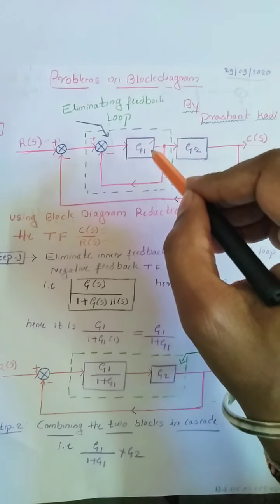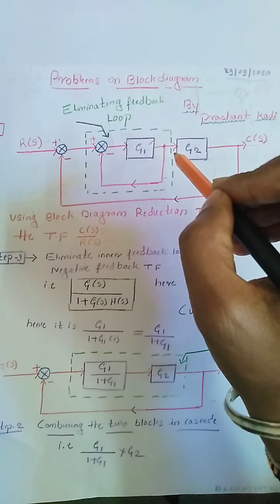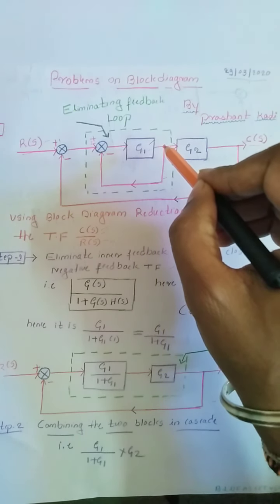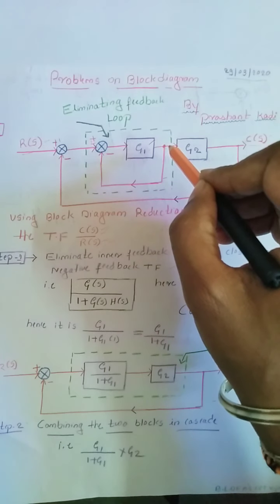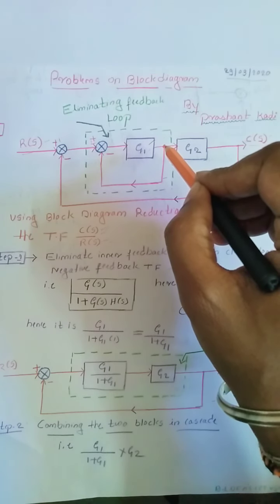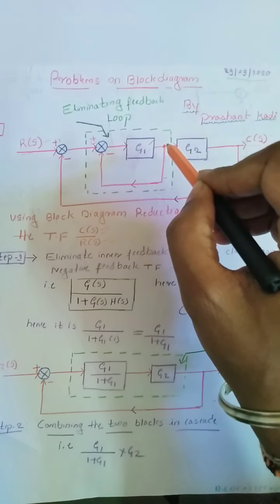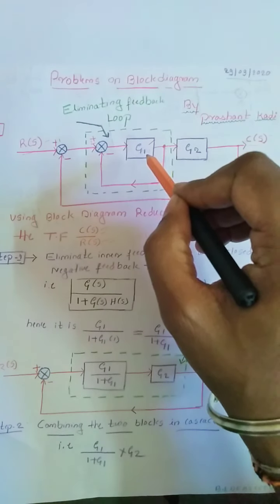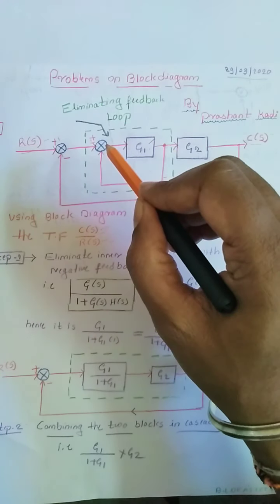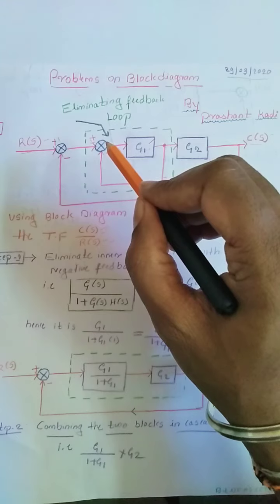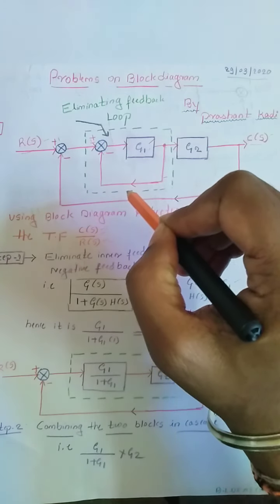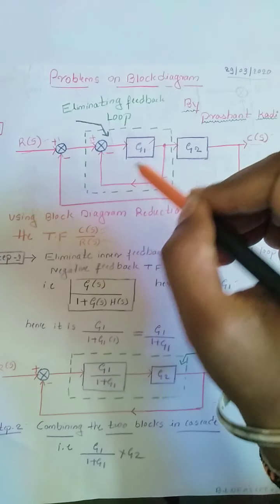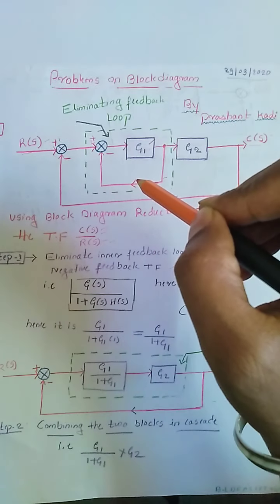Here in this question, the blocks G1 and G2 will not be connected in cascade because there is a takeoff point between these two points. If there is no takeoff point, the blocks could be connected in cascade and we could multiply their individual transfer functions according to the block diagram reduction rules. As the output of block G1 is connected to the summing point, we have a loop here. The first step is to reduce this loop using the closed loop transfer function.